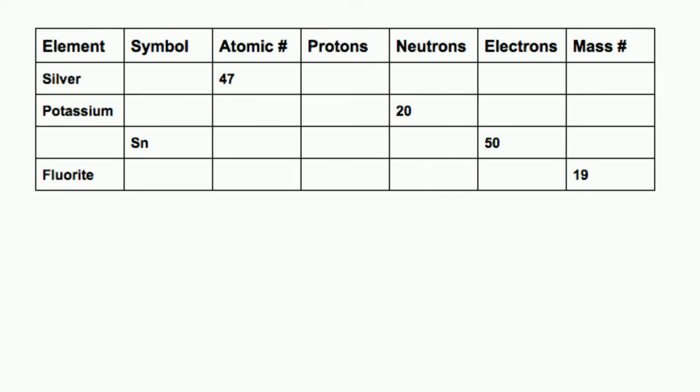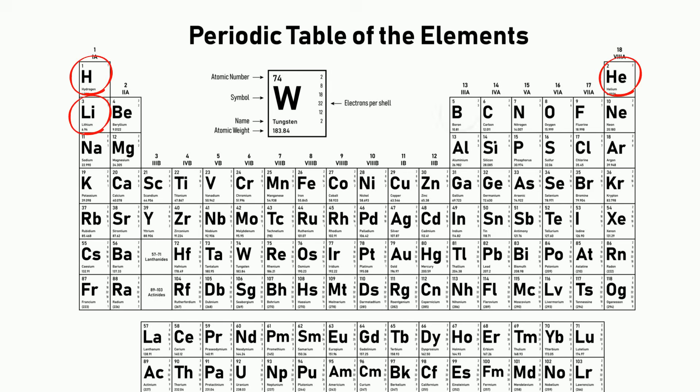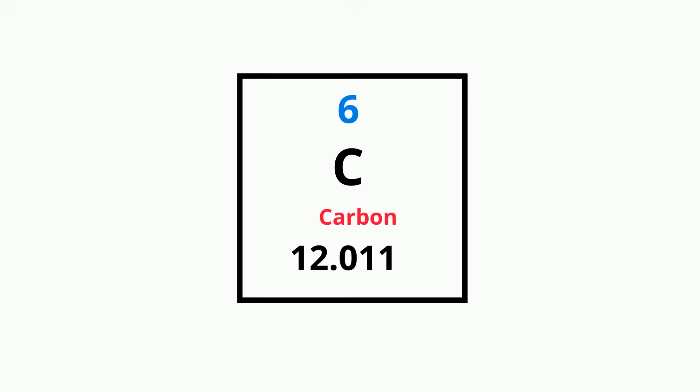Take a look at this chart. Let's figure out how to find the missing information. Each box of the periodic table contains information about an element. Let's look at carbon. First you will see the symbol. It's a one or two letter abbreviation derived from the element's English or Latin name. Below that is the element's common name. Above that is the atomic number.